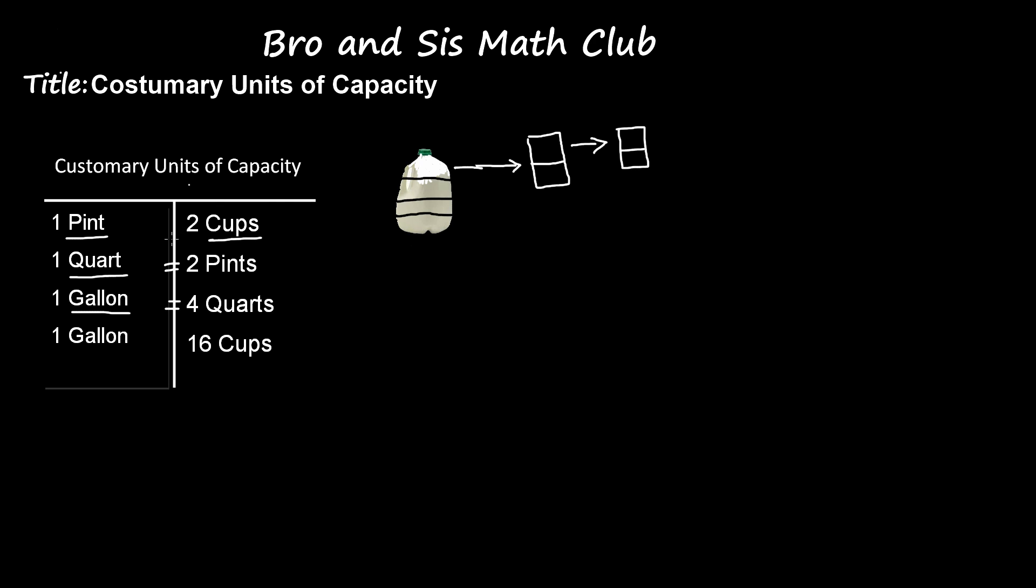Let's say we take this part. This part is going to be a cup. This is one cup. Now, the cup is the smallest unit of capacity here in these four.